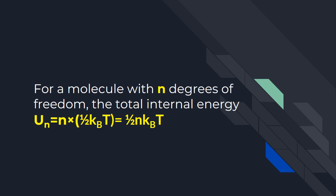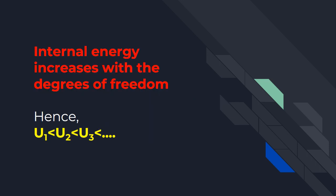So for a molecule with n degrees of freedom, the total internal energy will be Un equal to n times ½kBT, or we can write it as (n/2)kBT. So the internal energy increases linearly with the increase in degrees of freedom of the molecule. Mathematically, we can say that U1 < U2 < U3 and so on.